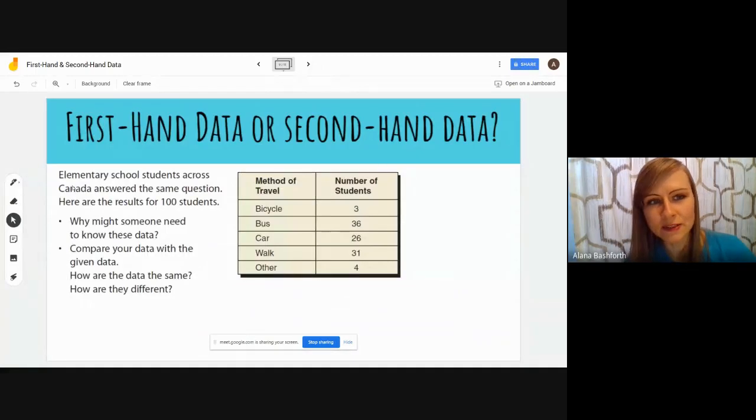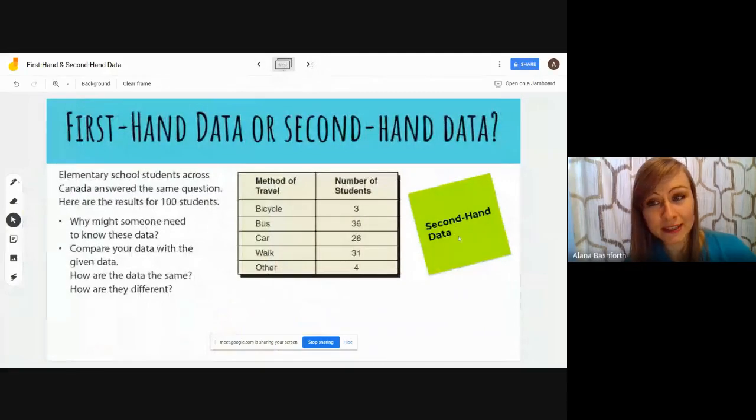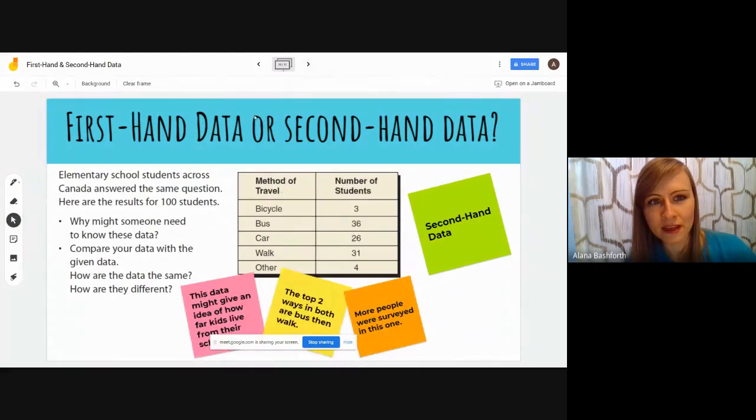The next one: first of all we want to know is this first or second-hand data. It says elementary school students across Canada answered the same question that we just did in the last example. Here are the results for 100 students. Again, we've got bicycle, bus, car, walk, and other just like you had in that first one. What might someone need to know or why might someone need to know this data? Compare your data with the data given. How are the data the same? How are they different? Your data is this one in our example here. First of all, that is second-hand data because somebody else took that data.